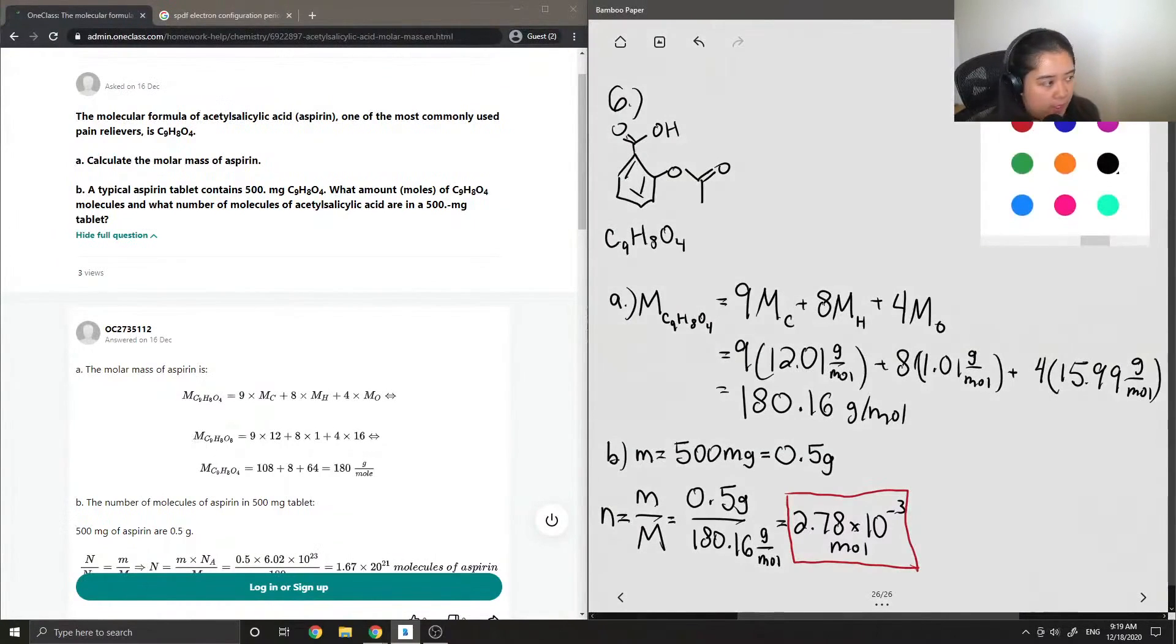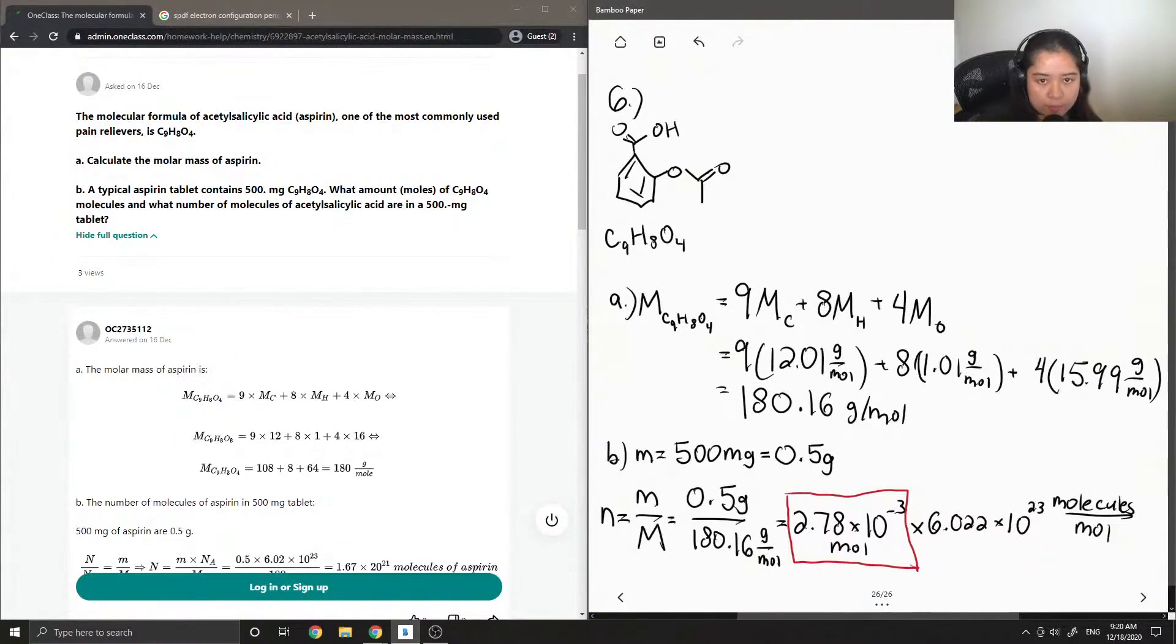And then to find the number of molecules, since we already have our value in moles, all we have to do is multiply by Avogadro's number, which is 6.022 times 10 to the 23 molecules per mole. So this cancels out our units in moles.